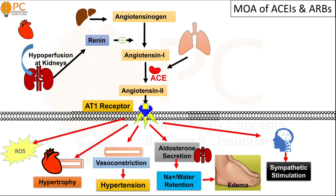In the cardiovascular system, angiotensin 2 may cause cardiovascular hypertrophy. It also increases the production of reactive oxygen species (ROS), which are free radicals, leading to increased oxidative stress. Therefore, inhibiting the effects of angiotensin 2 has significant therapeutic value.